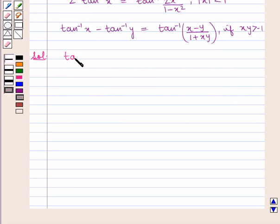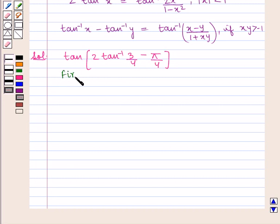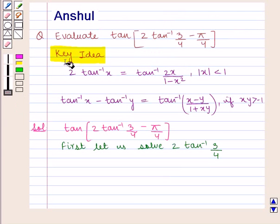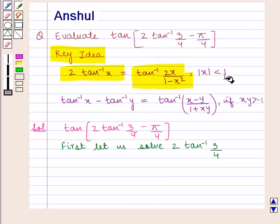We have the expression tan of 2 tan inverse of 3 by 4 minus pi by 4. First, let us solve 2 tan inverse of 3 by 4. From the key idea we know that 2 tan inverse of x is equal to tan inverse of 2x upon 1 minus x square, where modulus of x is less than 1.